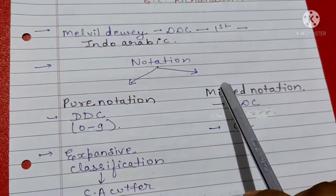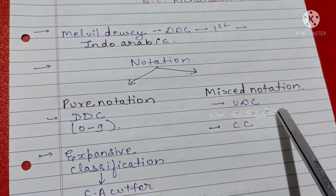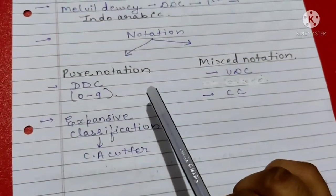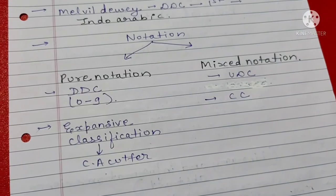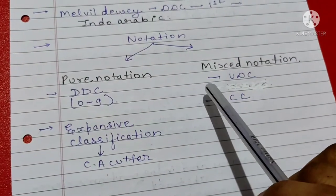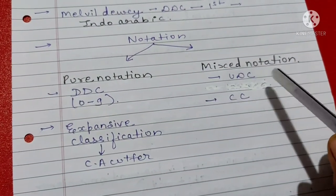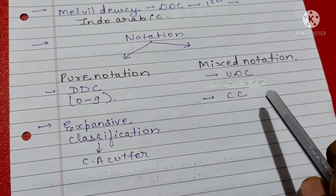Notation is a pure notation and a mixed notation. The question is, which type of notation was DDC and CC?